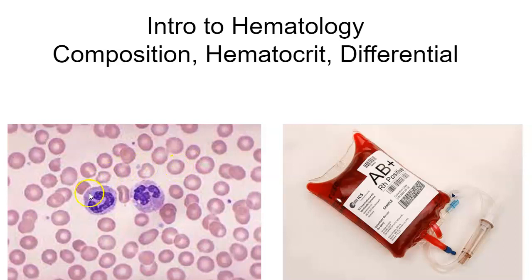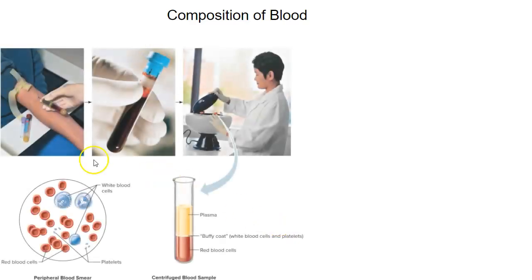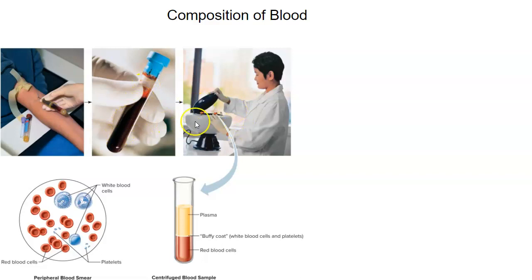Here we have red blood cells, a couple of white blood cells, and some whole blood. Whole blood is the blood that is flowing through your veins and arteries. When it's centrifuged and spun, the heavier elements go to the bottom — the red blood cells, white blood cells, and platelets — and then we have this watery, straw-colored, clear fluid called plasma.